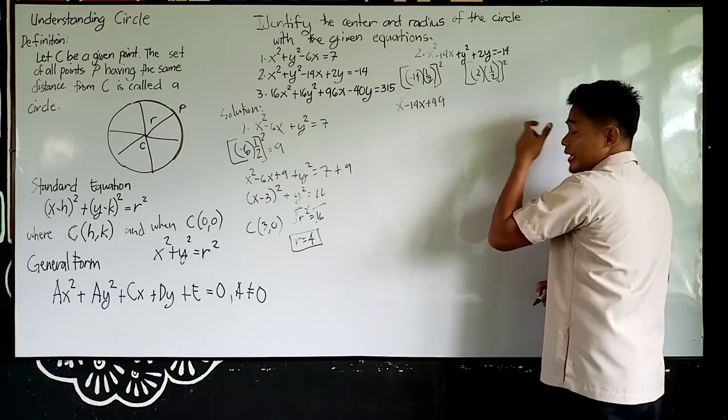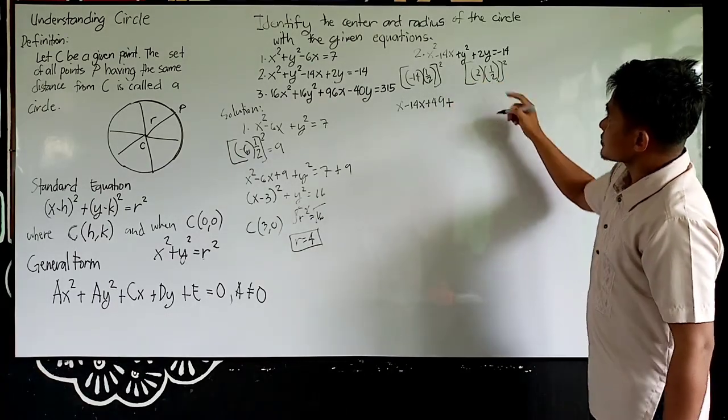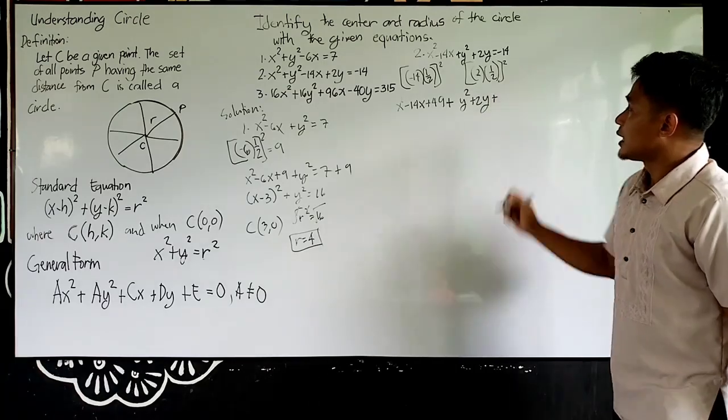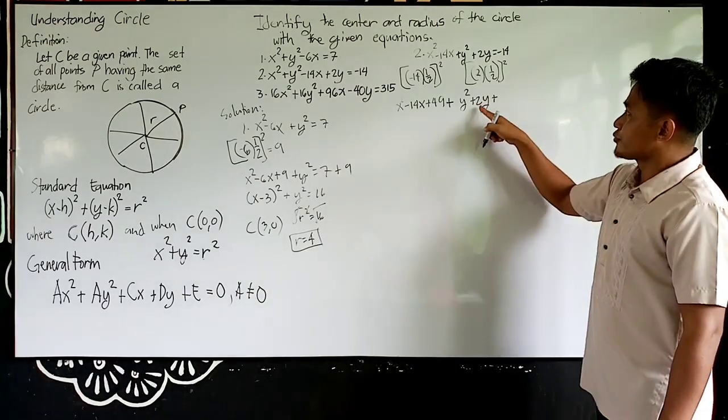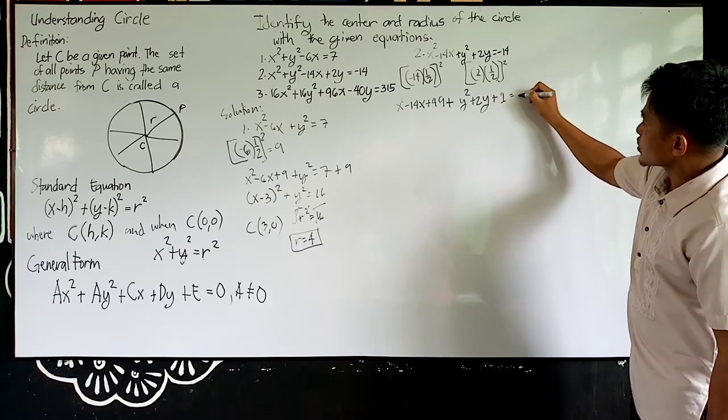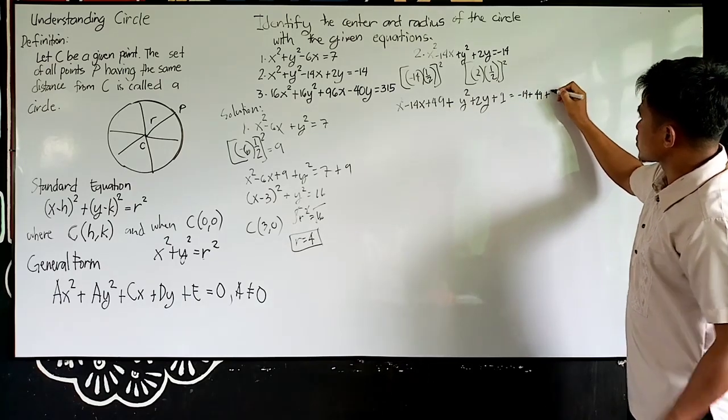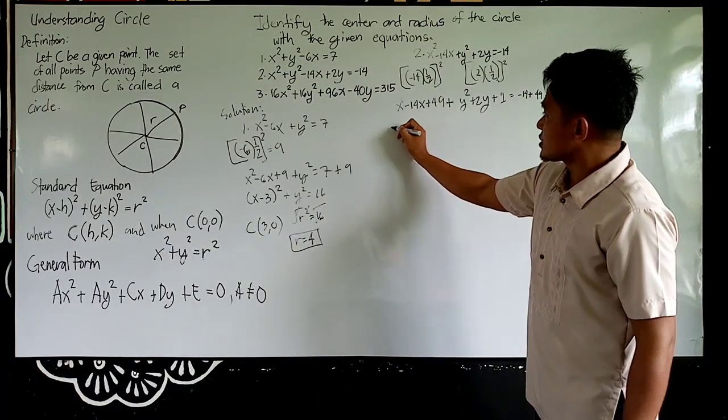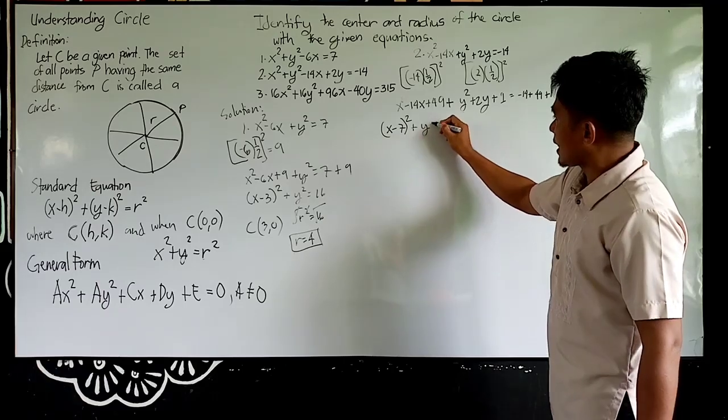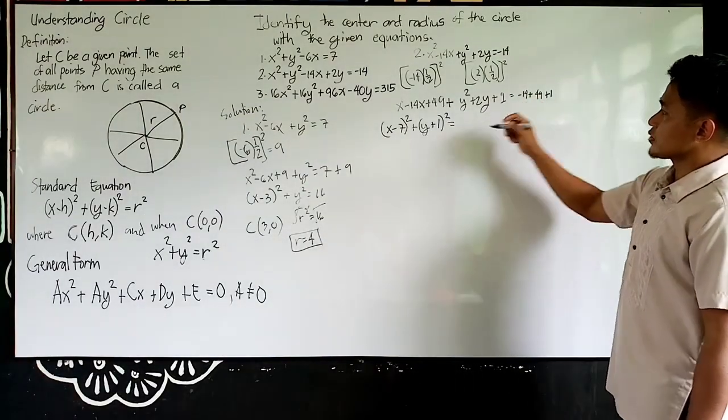And plus y² + 2y plus 1. 2 divided by 2, times 1 half, divided by 2, is 1 squared, then 1. Equals to negative 14 plus ano yung in-add mo? 49 plus 1. So factor these three terms. x - 7 squared plus, factor also this one, y + 1 squared. Then 50 minus 14, answer is 36.